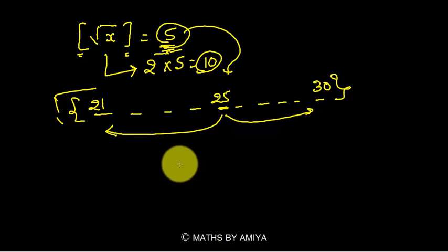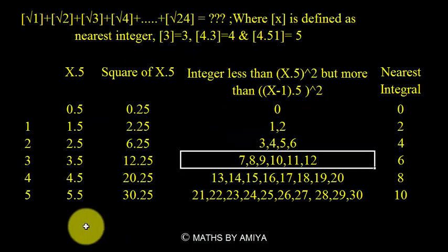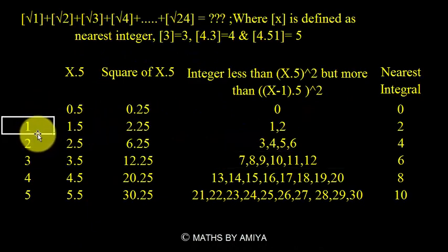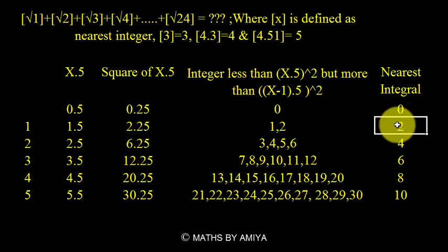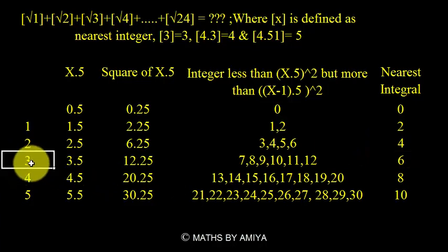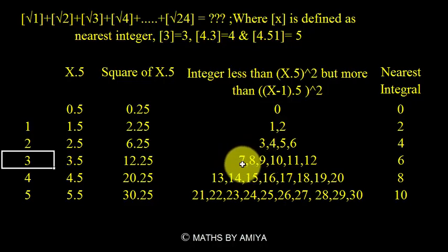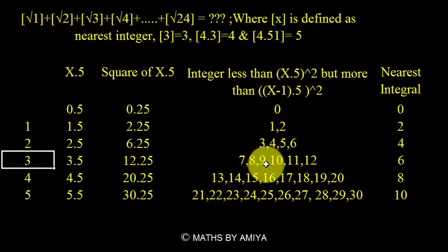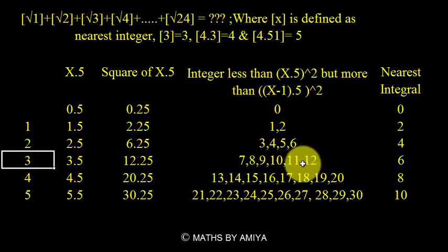So here we learn two concepts. Concept one: if we want nearest integer 1, we have 2 numbers; nearest integer 2 gives 4 numbers; nearest integer 3 gives 6 numbers. To find which numbers for n=3: square 3 to get 9 (the 3rd value). Subtract 2 and add 3 to get the range 7 to 12. These are the six numbers whose nearest integer of square root is 3.